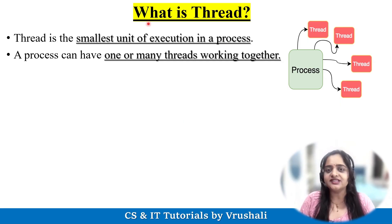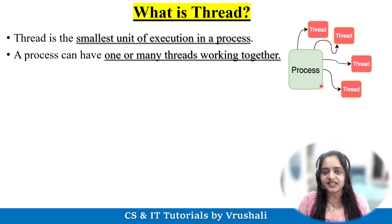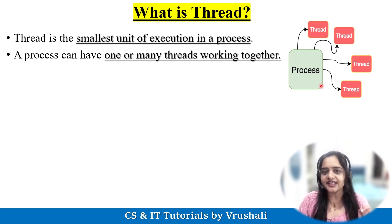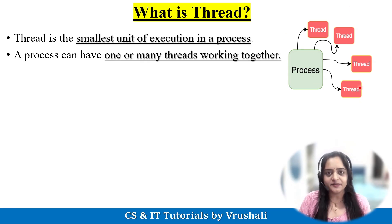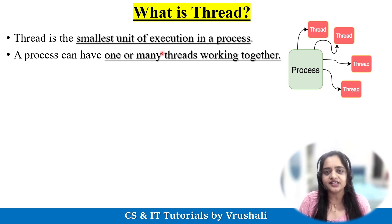The first question is: what exactly is a Thread? In our previous session we discussed about the process and complete process state transition diagrams. So what exactly is a process? Process means a program in execution. When you open a particular application, that application loads into memory for execution — this is called a process. Now a process has multiple threads, meaning one application has multiple features, and every feature works by individual threads. As per the definition, a thread is the smallest unit of execution in a process.